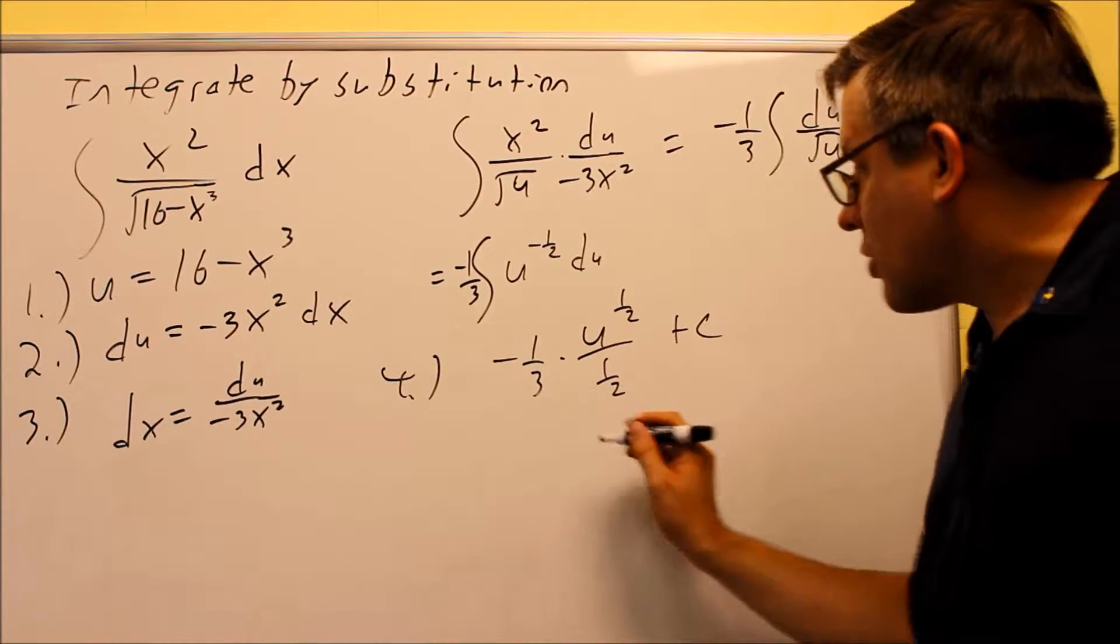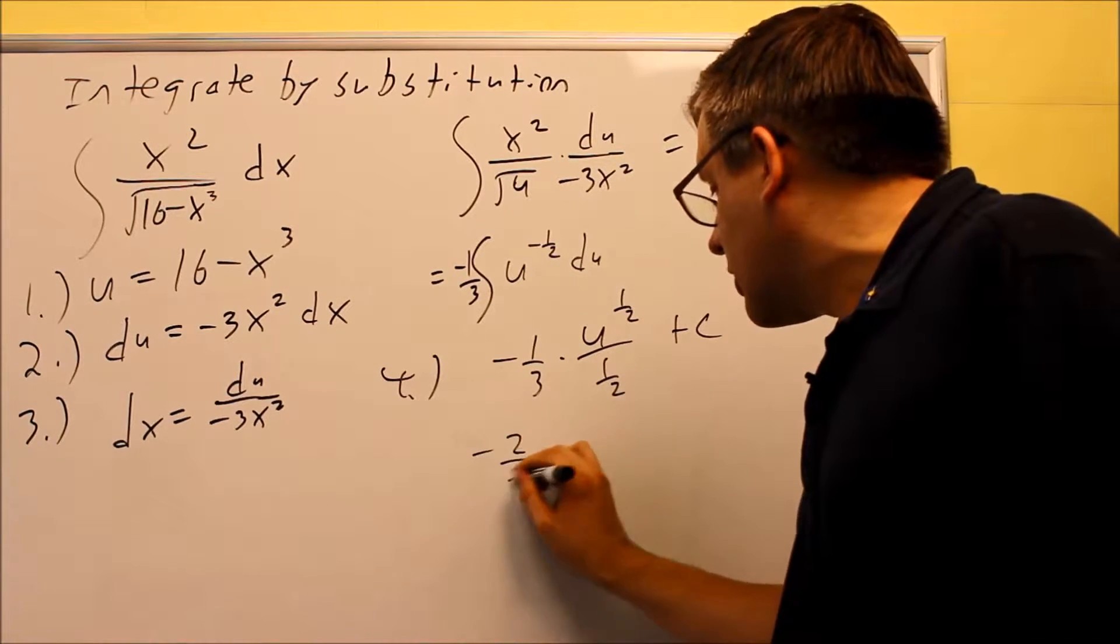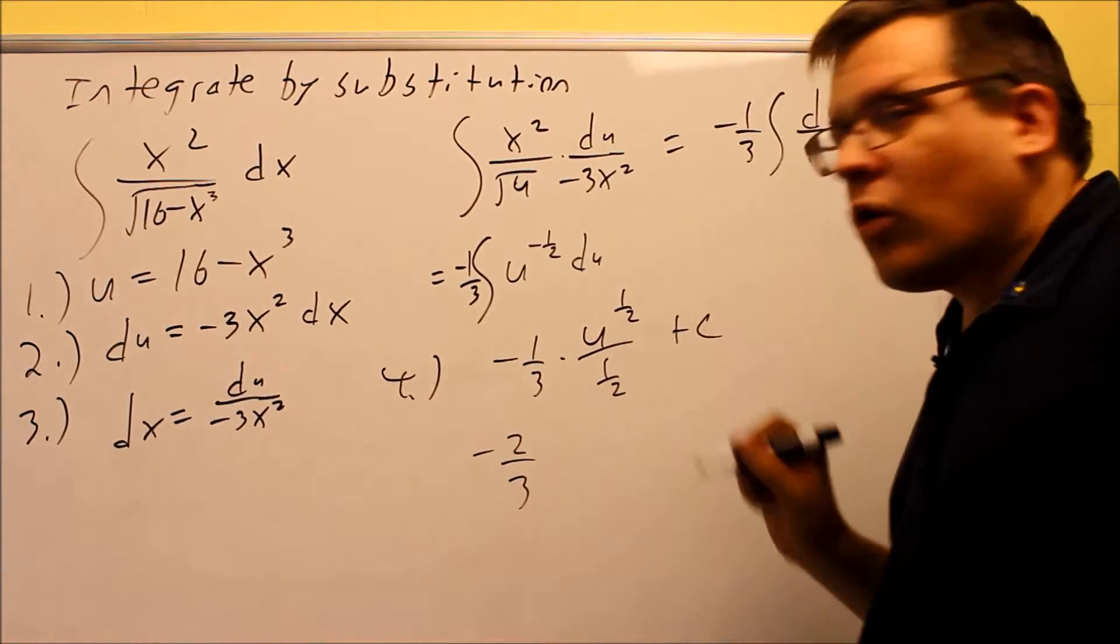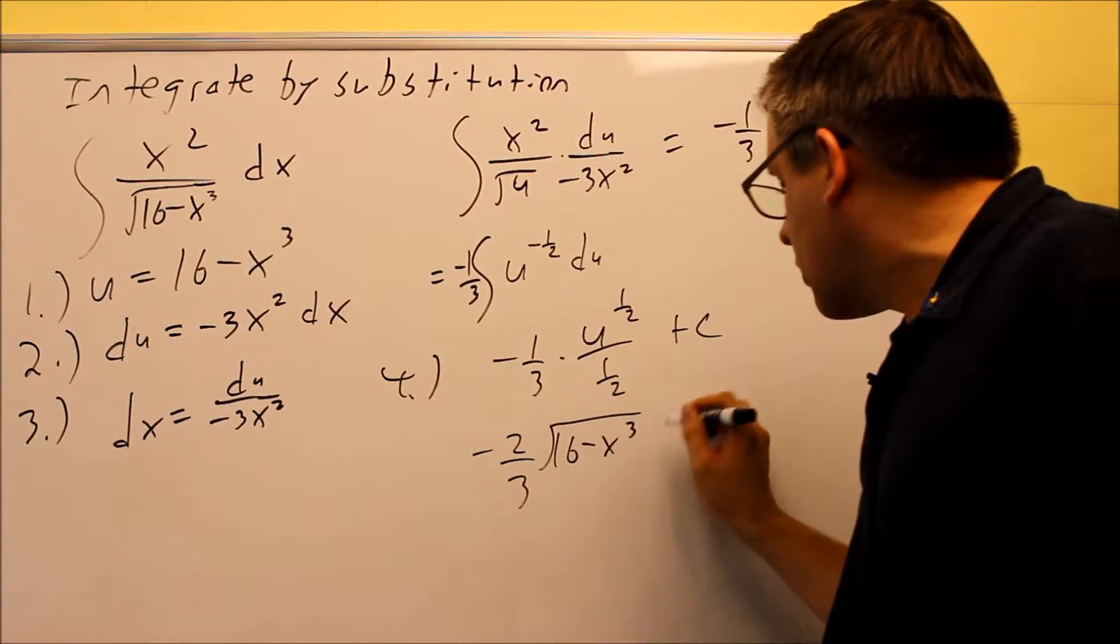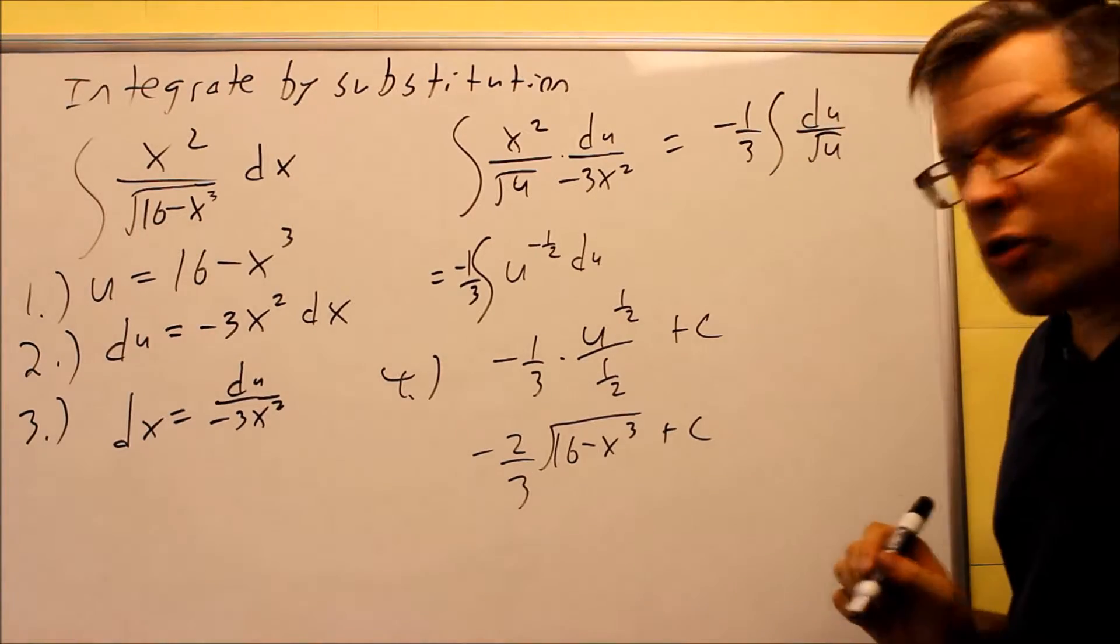And then when you flip this fraction, you're going to get negative two-thirds, and then I have u to the one-half, instead of the u, I'm going to put in 16 minus x cubed, and I can turn that into a square root as well.